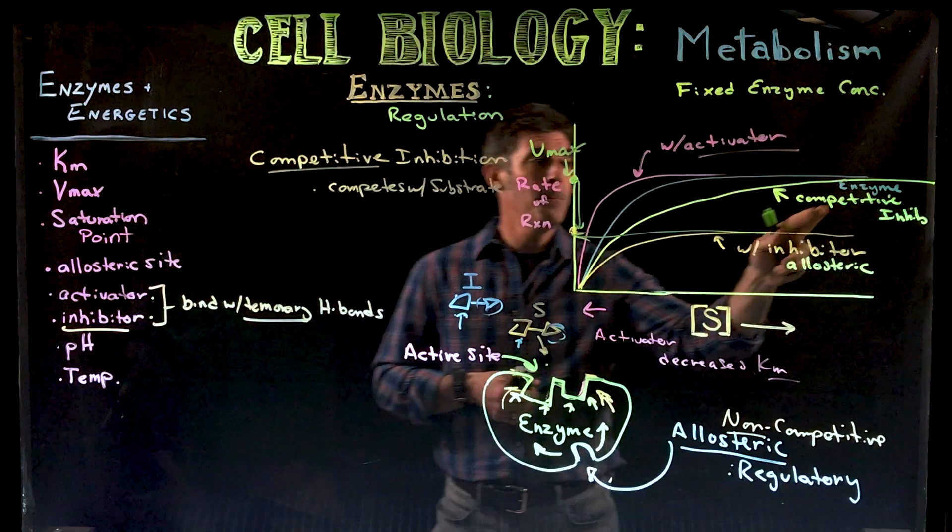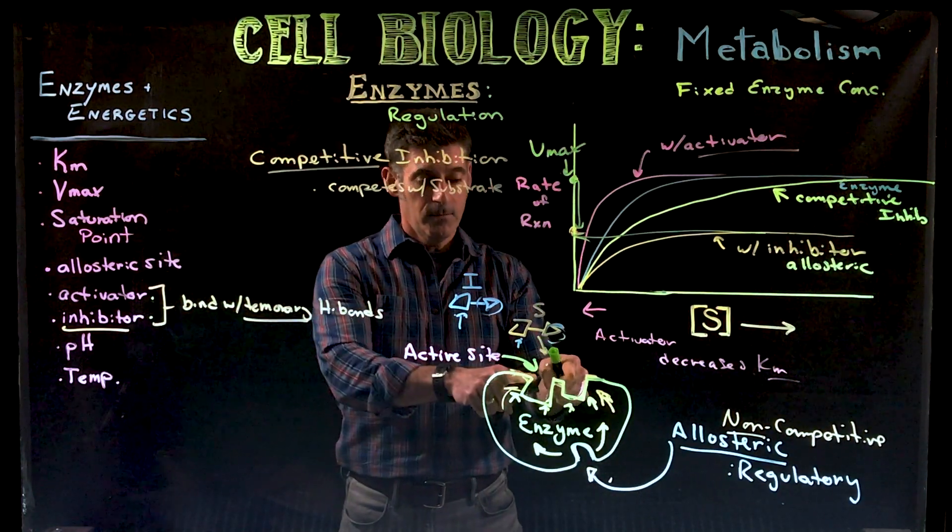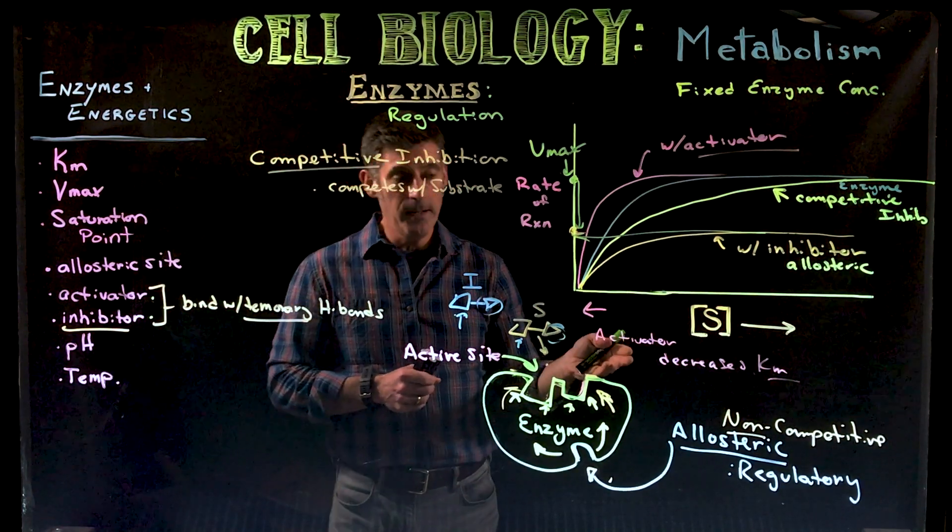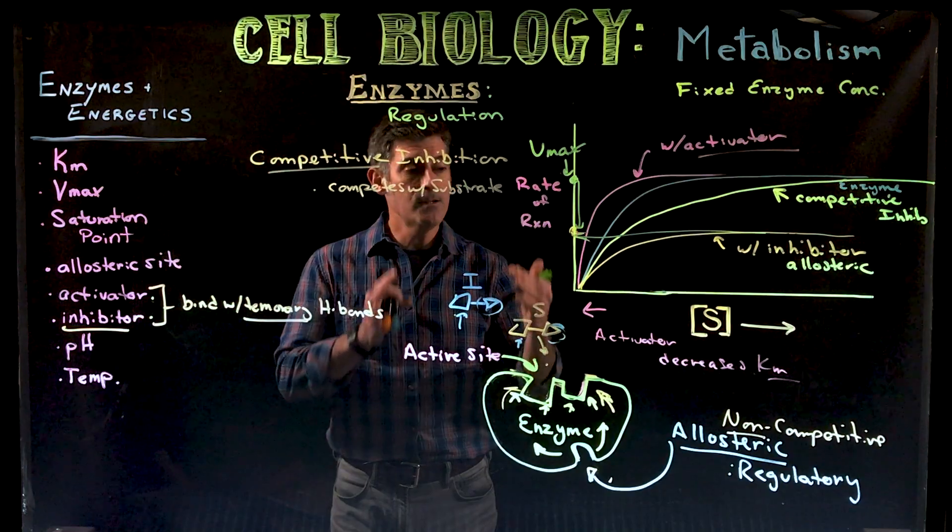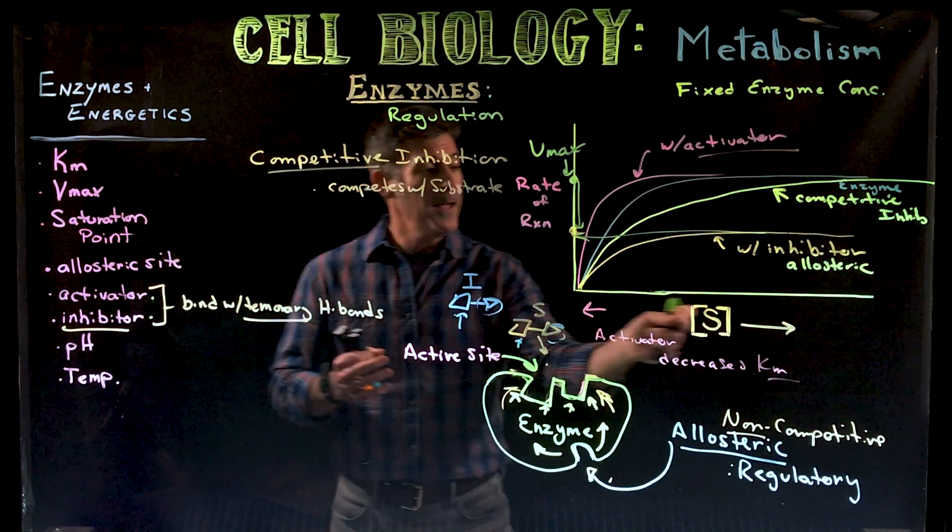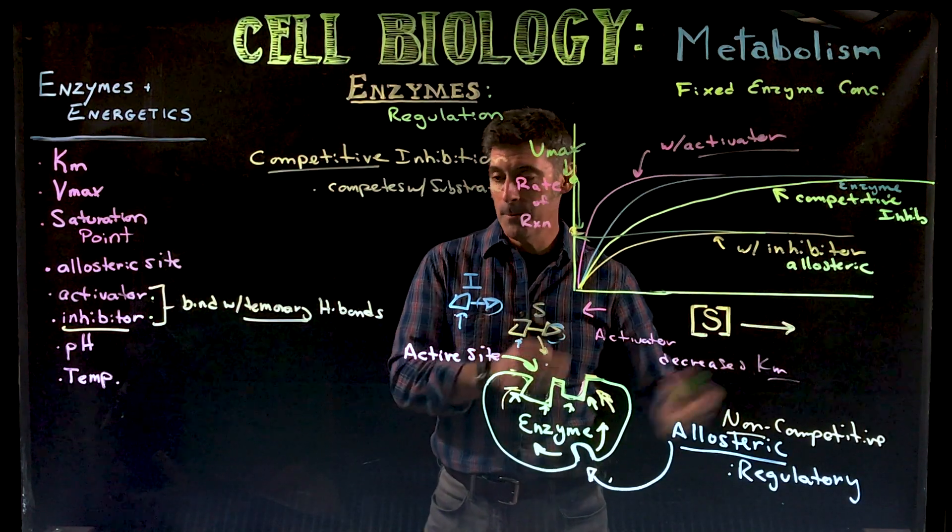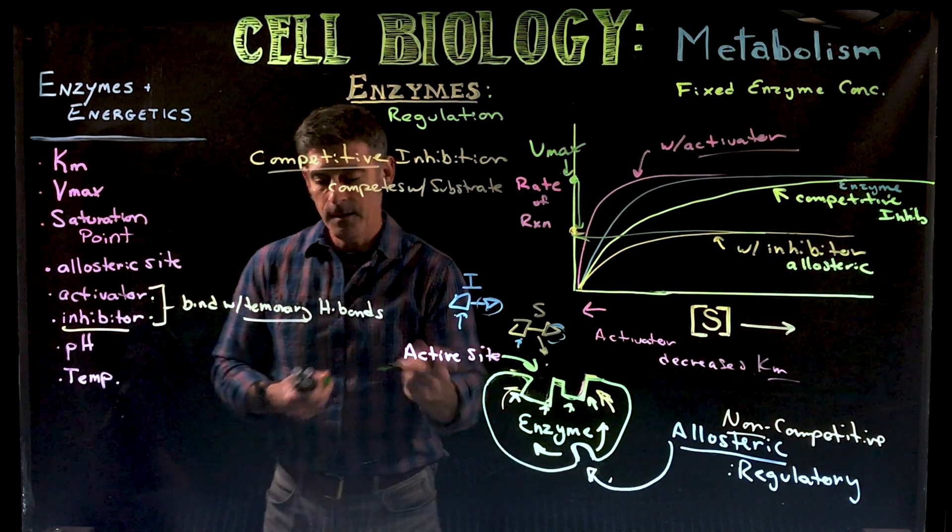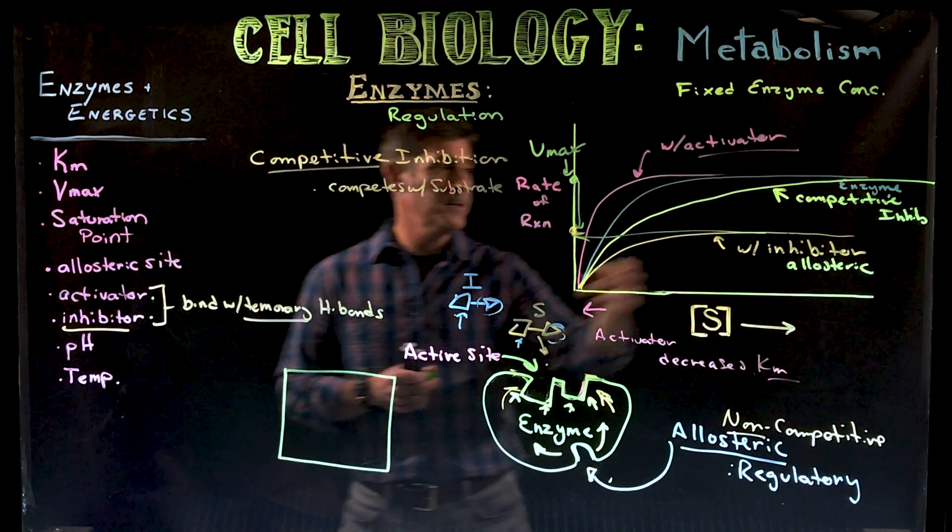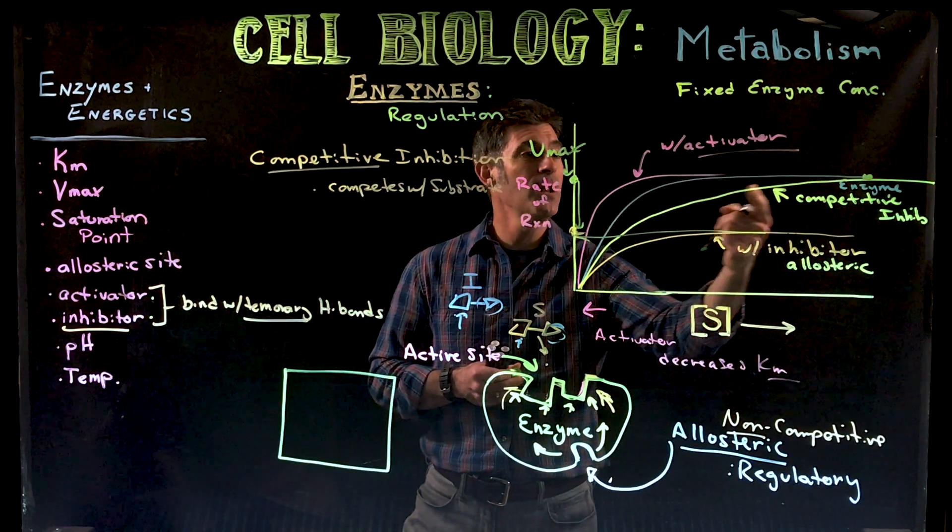In contrast, with competitive inhibition, because the competitor is trying to get to the exact same site as the substrate, this one is concentration dependent. So essentially the idea is you can dilute out the inhibitor by adding more substrate. If there's more substrate and more substrate and more substrate, eventually it'll seem as if there's no inhibitor present and you'll be able to go with the exact same Vmax. Now it will take a lot more substrate molecules to get to the same speed, but it'd be possible.